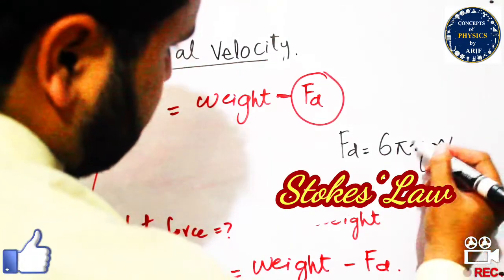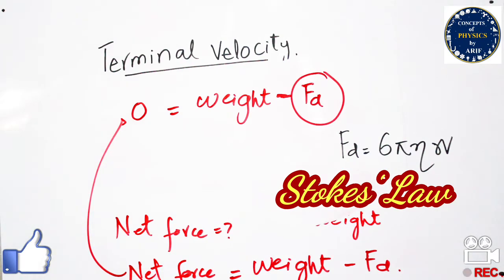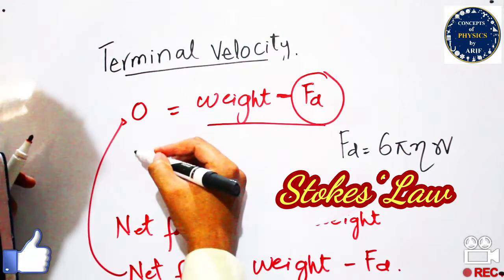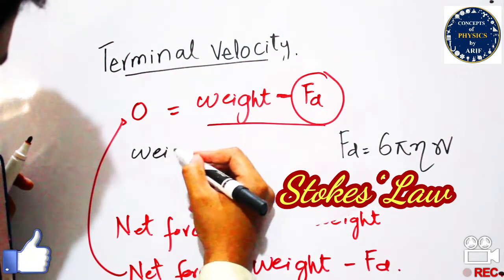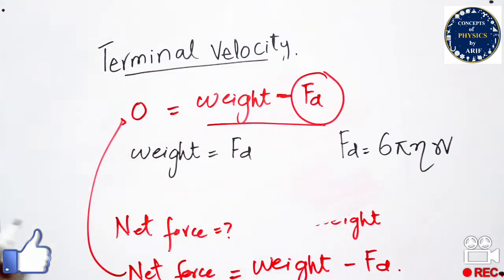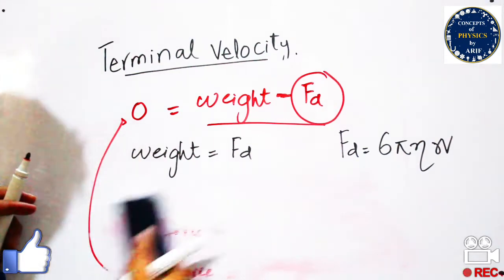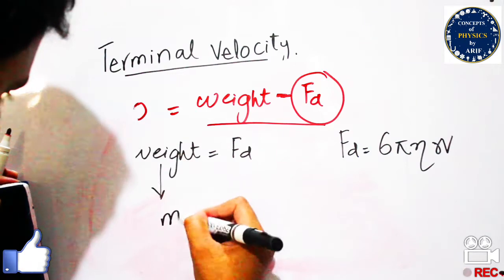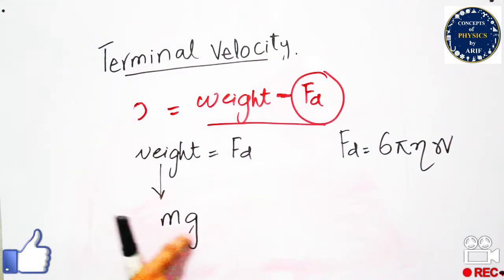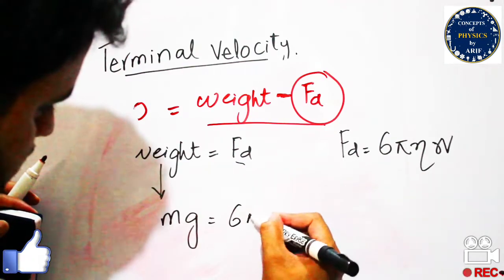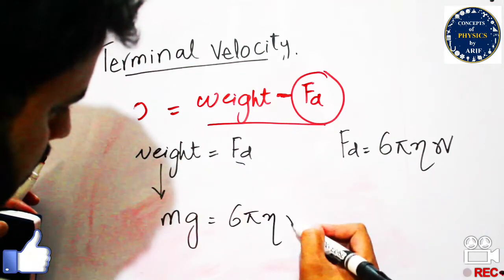Stokes' law states that Fd = 6πηRv, where η is the coefficient of viscosity of the fluid. We can now simplify the equation: weight equals drag force, so Mg = 6πηRv.